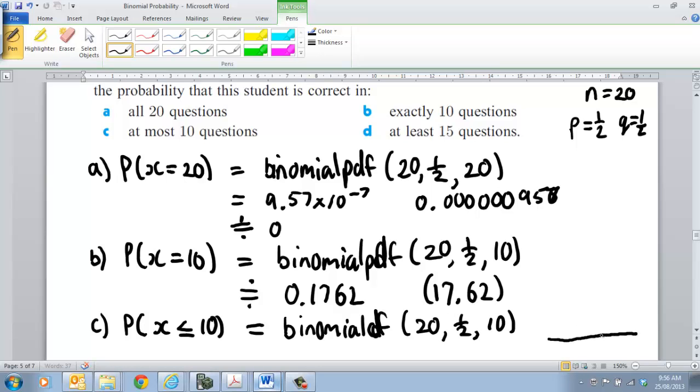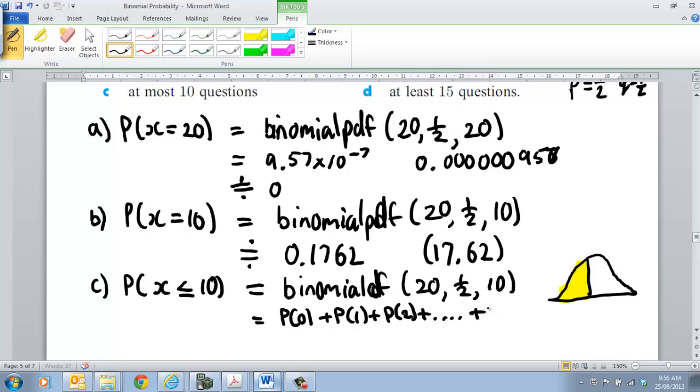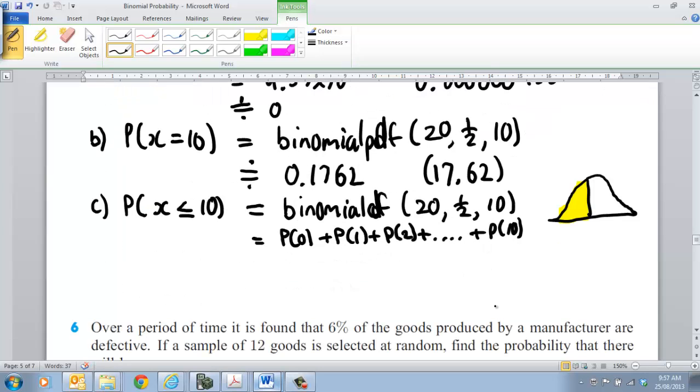What that will actually do is it will work out this area for us. So technically what it's doing, it's working out 0, 1, 2, 3, 4, 5, 6, 7, 8, 9, 10, and it's adding all of those results together. That's actually working out the probability of getting 0 plus the probability of getting 1 plus the probability of getting 2. Now imagine if you used the other formula to do all this. This would be so tedious. It would take you forever. You wouldn't get probably a couple of questions finished in the test or in the exam. It would be crazy.